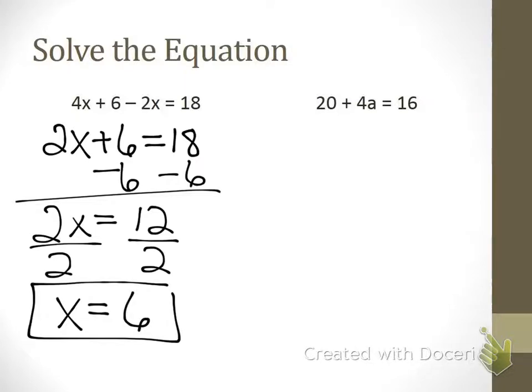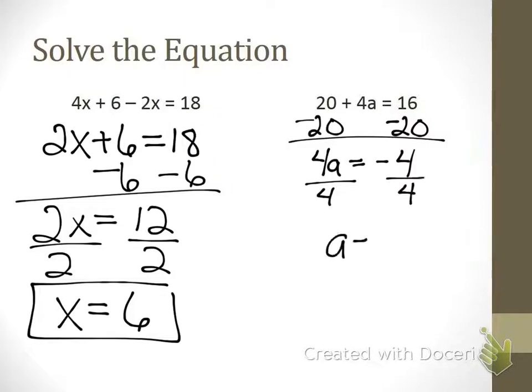All right, go ahead and solve the second one now. Okay, what do I do to both sides first? Subtract twenty. Subtract twenty. And then four a equals what? Negative four. Negative four a. Wait, I'm hitting four a equals negative one. Yeah, yeah, four a equals negative four. All right, and then I divide both sides by four, a equals negative one. All right, you got it right. Negative one. Okay.